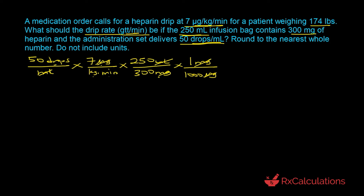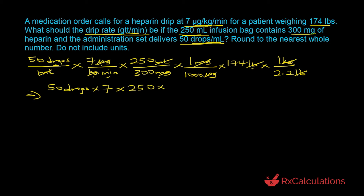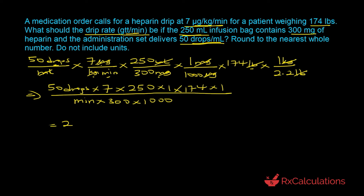We are now in drops per kilogram per minute, so we multiply by the patient's weight. The patient is 174 pounds; we convert to kilograms using 2.2 pounds equals 1 kilogram. The kilograms and pounds cancel out and we are now in drops per minute. Multiplying all numerator terms and dividing by all denominator terms: 50 × 7 × 250 × 1 × 174 × 1 divided by 300 × 1,000, which equals 23. The answer is 23.